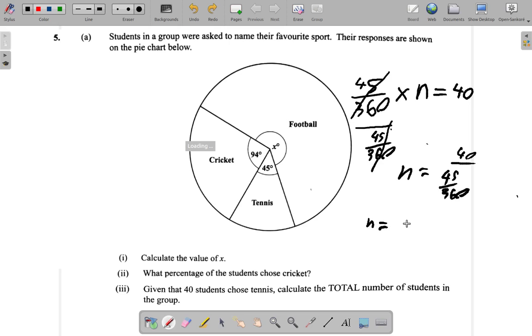This would become 40 multiplied by 360 over 45. When you have a number divided by a fraction, it's the same as the number multiplied by the reciprocal of the fraction.